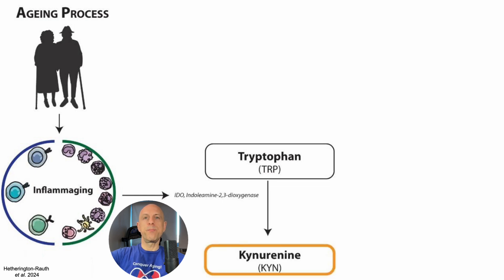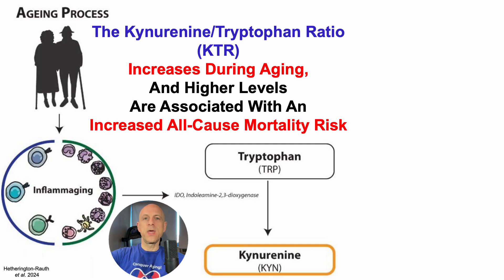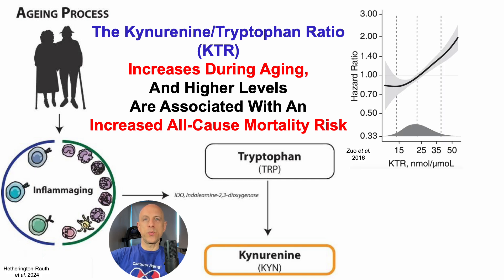Taking it a step further, the importance of the kynurenine to tryptophan ratio is that it increases during aging, and a relatively higher kynurenine to tryptophan ratio is associated with an increased all-cause mortality risk, which is what we'll see here, with the hazard ratio for all-cause mortality on the y-axis plotted against the kynurenine to tryptophan ratio on the x-axis.